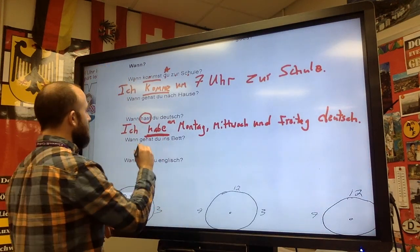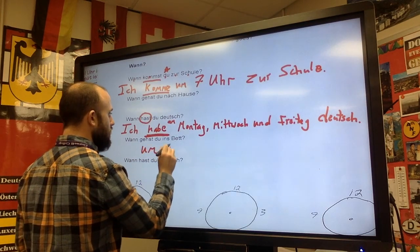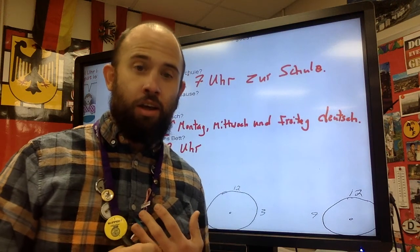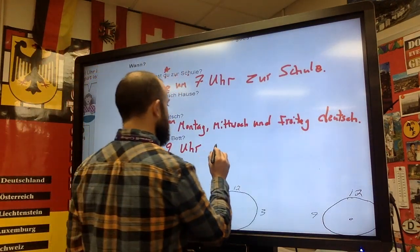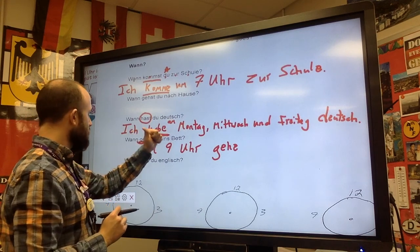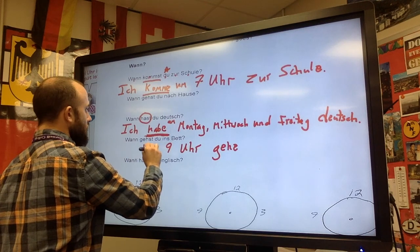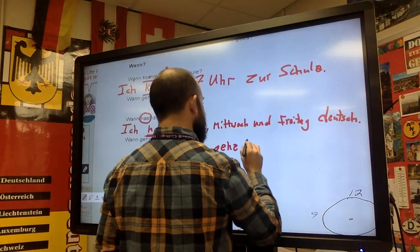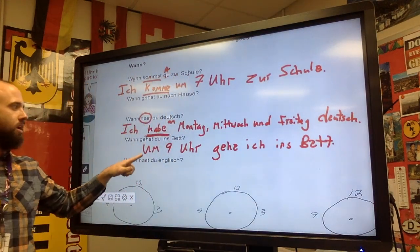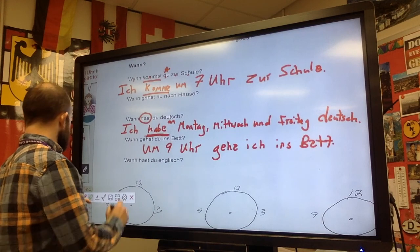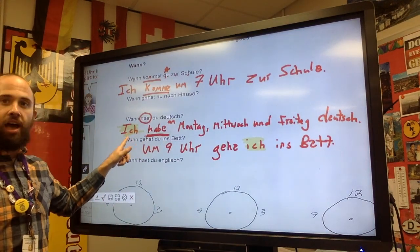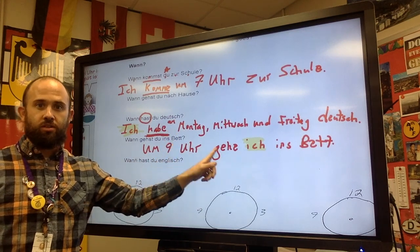Wann gehst du ins Bett? I go to bed kind of early. Um neun Uhr. I could also set up a sentence about going to bed at nine o'clock by saying um neun Uhr. I'm using gehst for my question. Um neun Uhr, gehe ich ins Bett. And I wanted to show you that one because I can flip around my ich. See how it's on this side of habe and down here it's on this side of gehe.